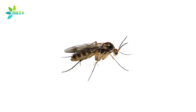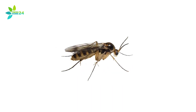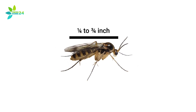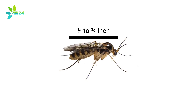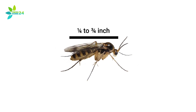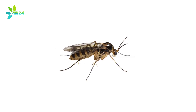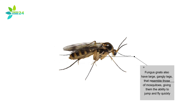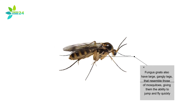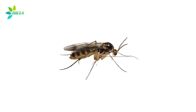Gnats, on the other hand, are black with black eyes. Compared to their small bodies — which measure approximately one-fourth to three-fourths of an inch in length — a gnat's wings are disproportionately large. Fungus gnats also have large, gangly legs that resemble those of mosquitoes, giving them the ability to jump and fly quickly.